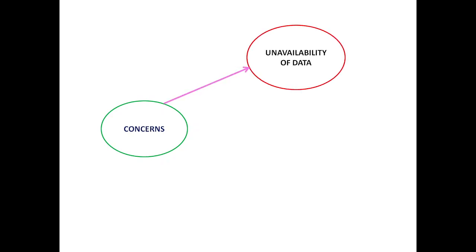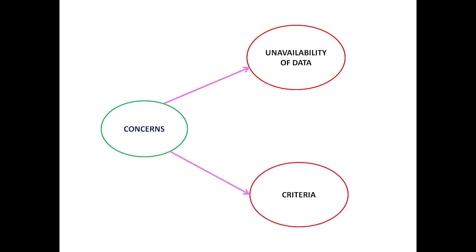The first concern is unavailability of data — the government does not hold clear data on who should be given this reservation, as the criteria is based on land size or income and no comprehensive data exists on how many persons fall above or below the threshold. There is also a concern about the criteria itself — different states will have different types of reservation. In states like Goa, where per capita income is high, the criteria will be different from states like Bihar, where per capita income is low. This creates confusion about the criteria under which EWS reservation should be applied.